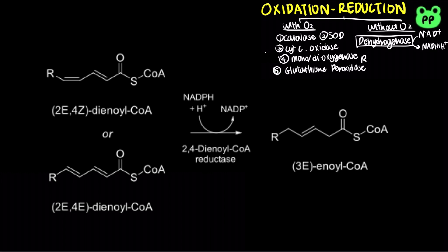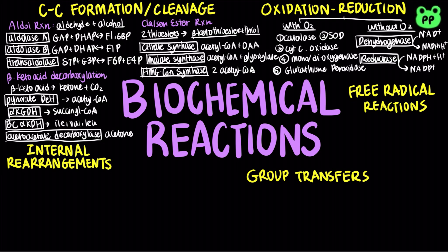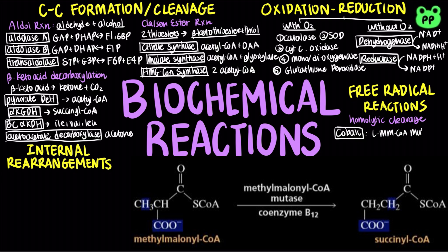On the other hand, reductases reduce a compound by oxidizing NADPH into NADP+. They are involved in fatty acid biosynthesis as well as cholesterol biosynthesis. Free radical reactions involve homolytic cleavage of covalent bonds to generate free radicals. Examples include L-methylmalonyl-CoA mutase, which converts L-methylmalonyl-CoA to succinyl-CoA with the coenzyme vitamin B12, which involves the cobalt radical. It is an important step in funneling odd-chain fatty acids and several amino acids into the citric acid cycle.